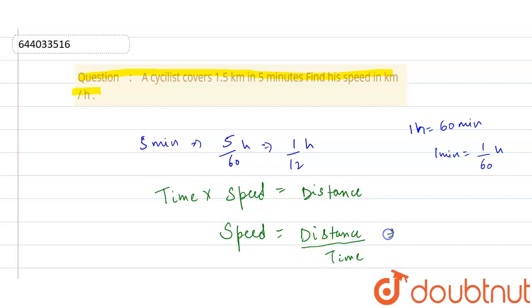The value of distance is 1.5 divided by time, which is 1 by 12.